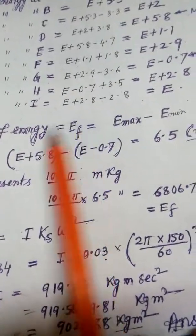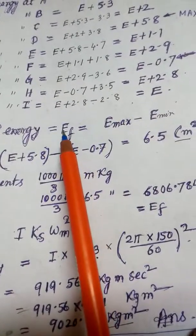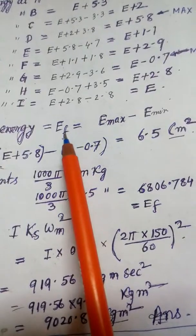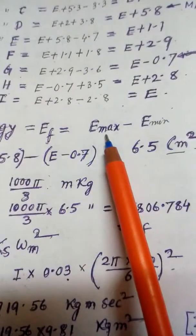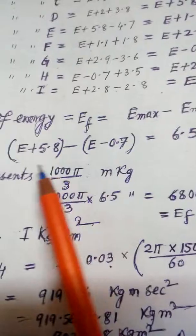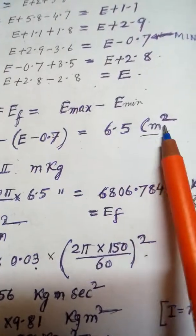Let us call it Ef. Previously in my video it was Kf, no problem. Energy fluctuation, so it is E max minus E min. This is E max minus this is E min, so this is equal to 6.5 centimeter square.